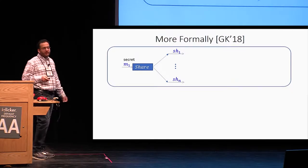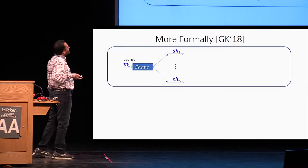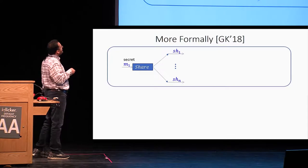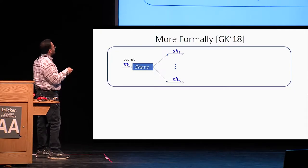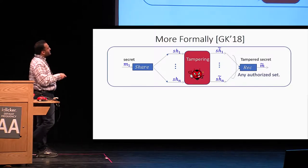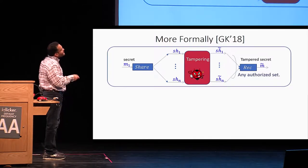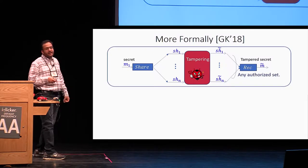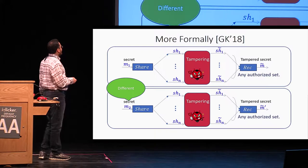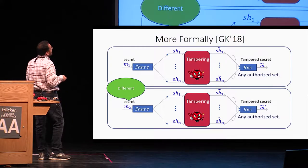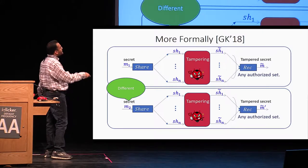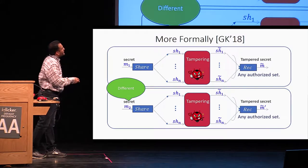More formally, in non-malleable secret sharing you can consider two experiments. In the first experiment, the original secret is m1, which is divided into various shares. The shares are tampered by the adversary, and after reconstruction we get message m-tilde. We can consider a second experiment in which we start with a different message m2. Again, the tampering happens and you get m-tilde prime.